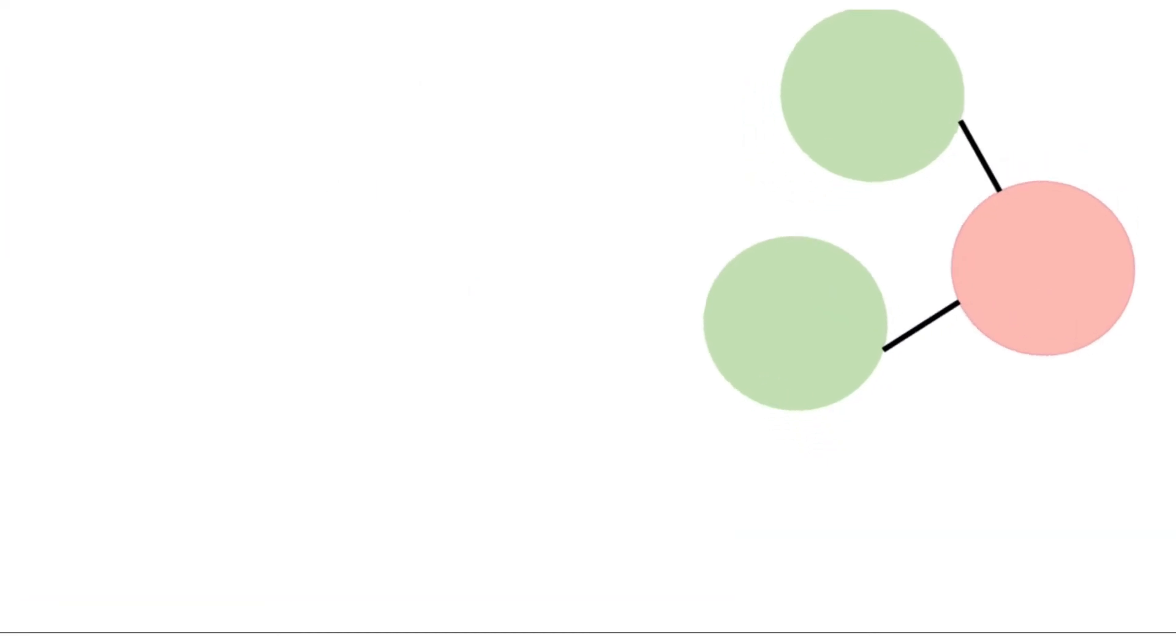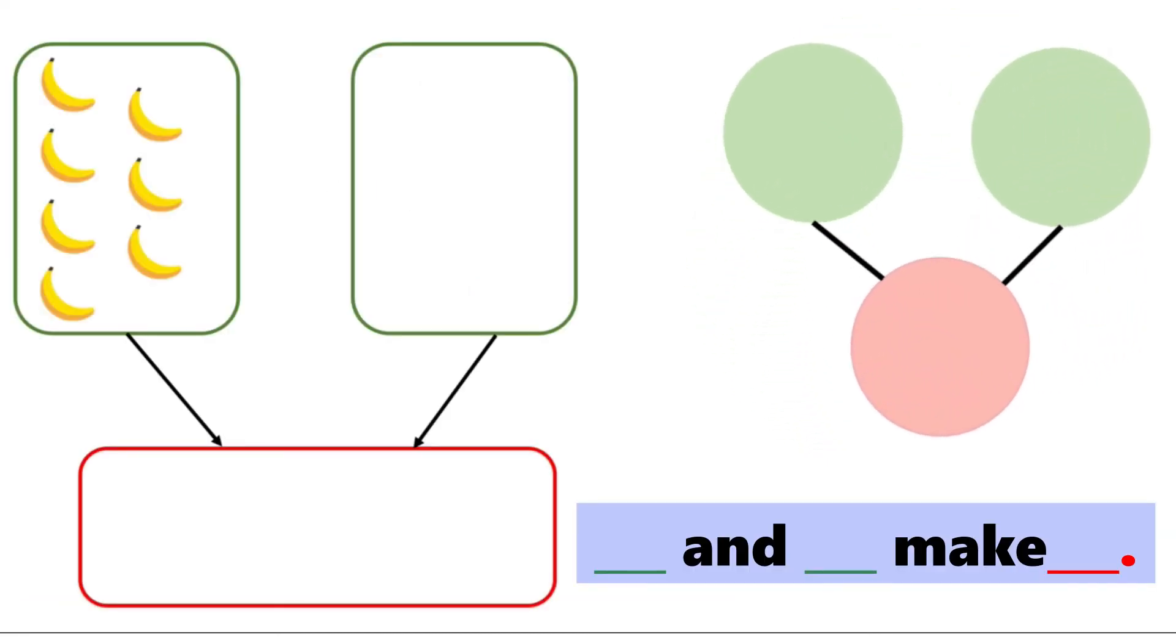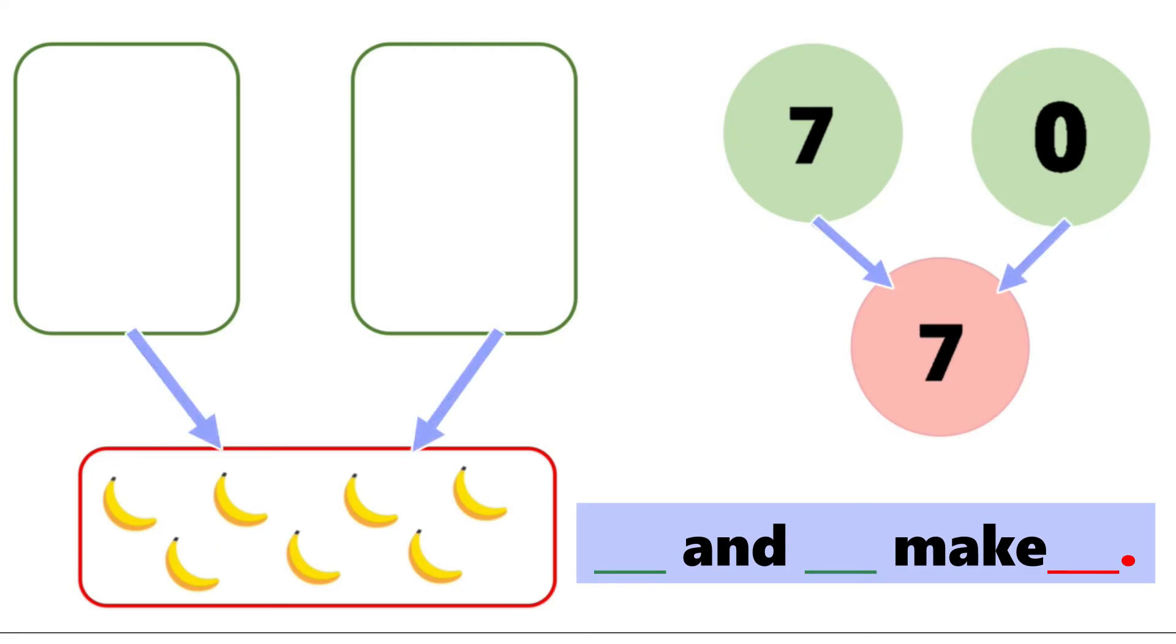Try the last example. There are seven bananas. So let's write seven. There are no fruits in the other part. So we write zero. That's right. If we put them together, we still have only seven bananas. So the parts seven and zero make the whole seven.